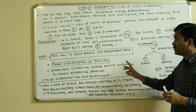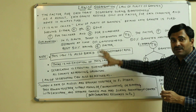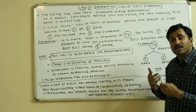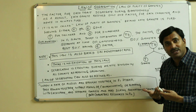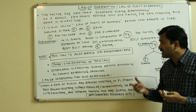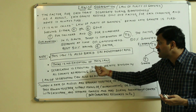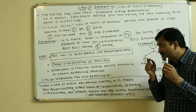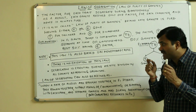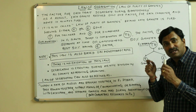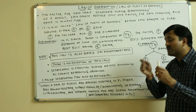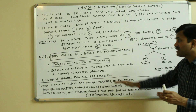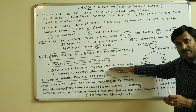This segregation is also important in the case of sexually reproducing organisms. Segregation is essential during meiotic division. Whenever meiotic division occurs, segregation occurs. This segregation which occurs during meiotic cell division is actually occurring in sexually reproducing organisms.